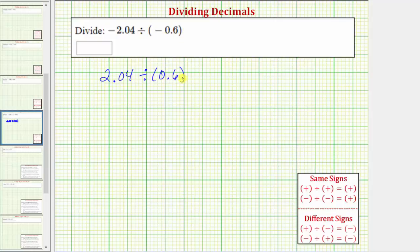So for the next step, let's write this in long division form. We would have 2.04 divided by 0.6.